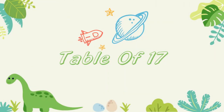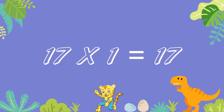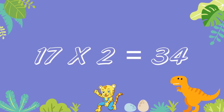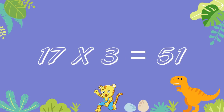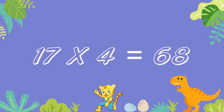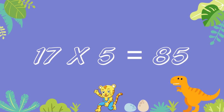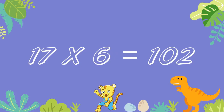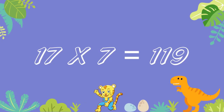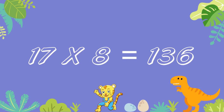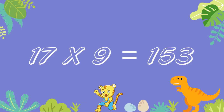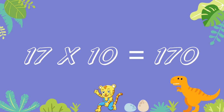Table of 17. Seventeen ones are 17. Seventeen twos are 34. Seventeen threes are 51. Seventeen fours are 68. Seventeen fives are 85. Seventeen sixes are 102. Seventeen sevens are 119. Seventeen eights are 136. Seventeen nines are 153. Seventeen tens are 170.